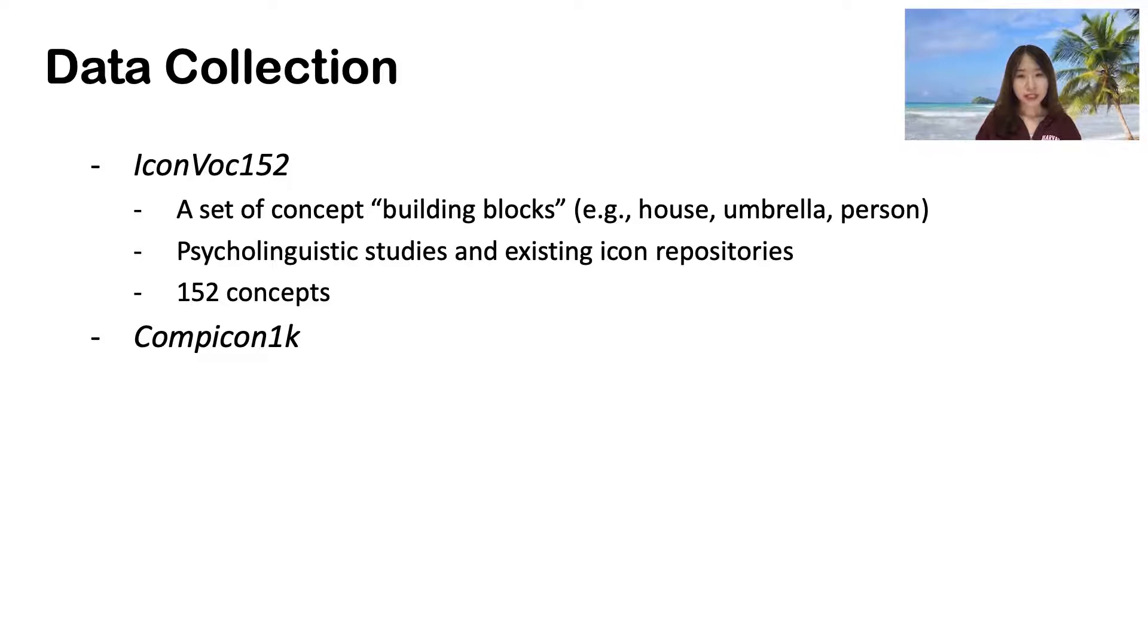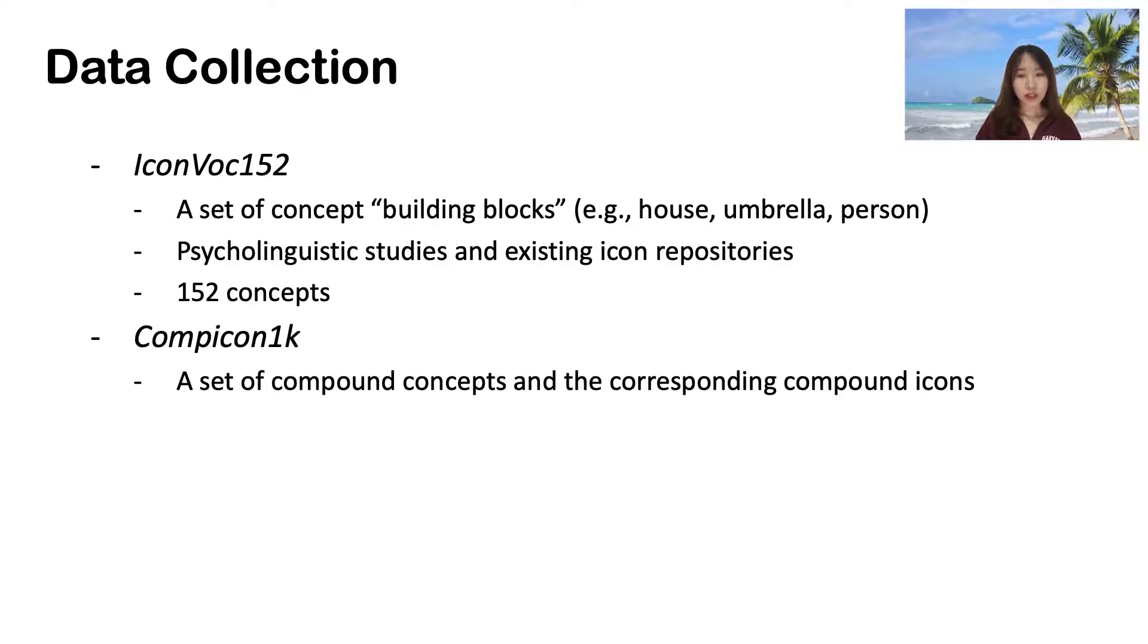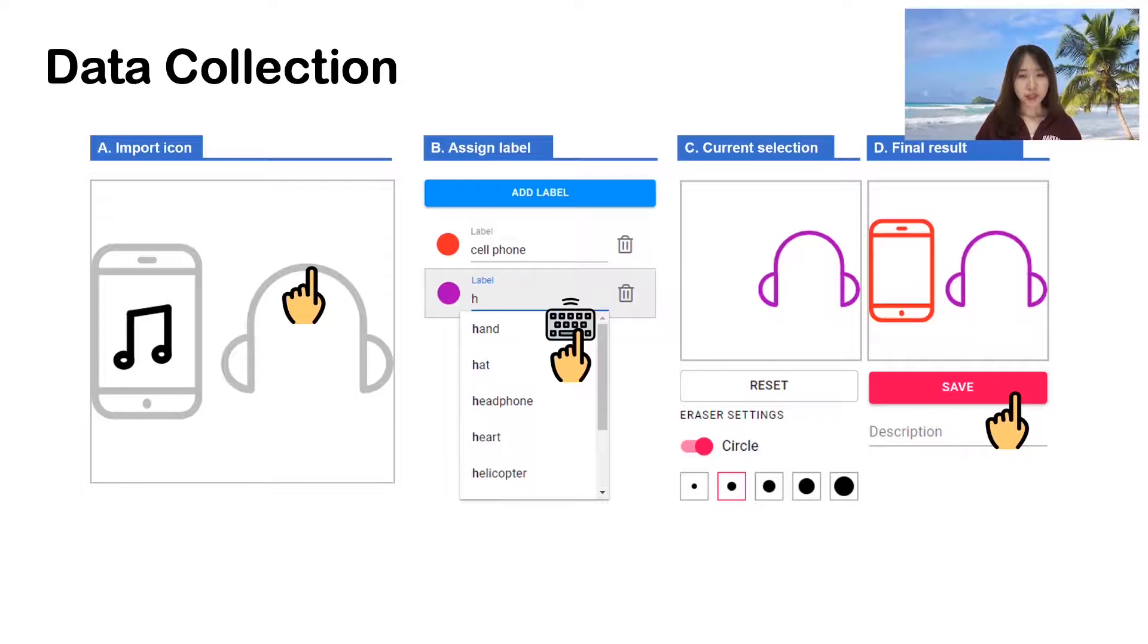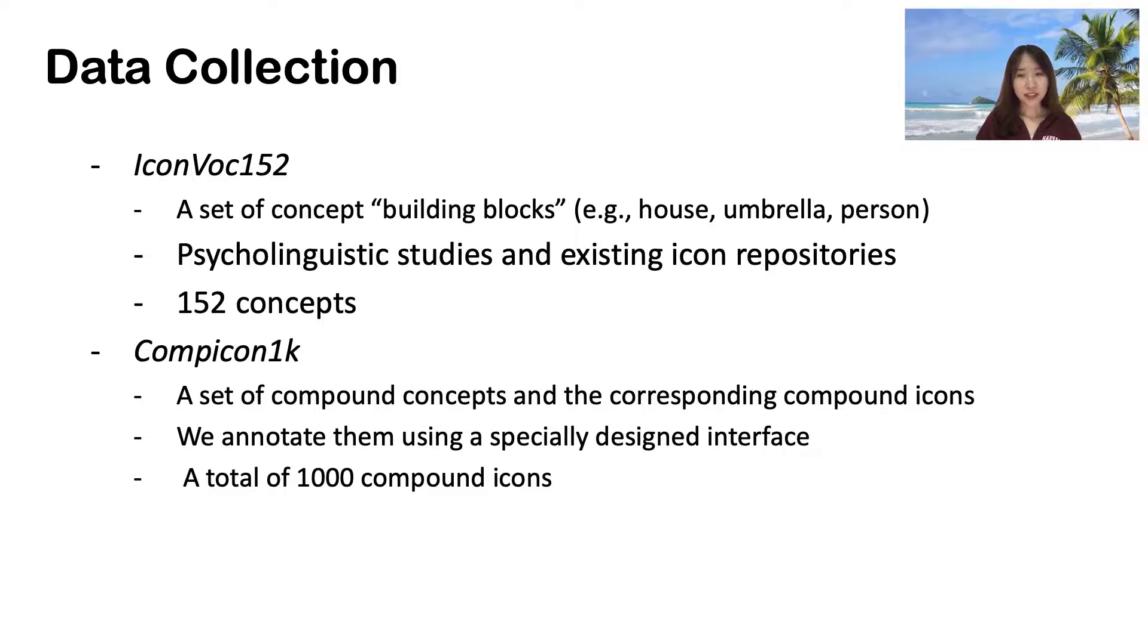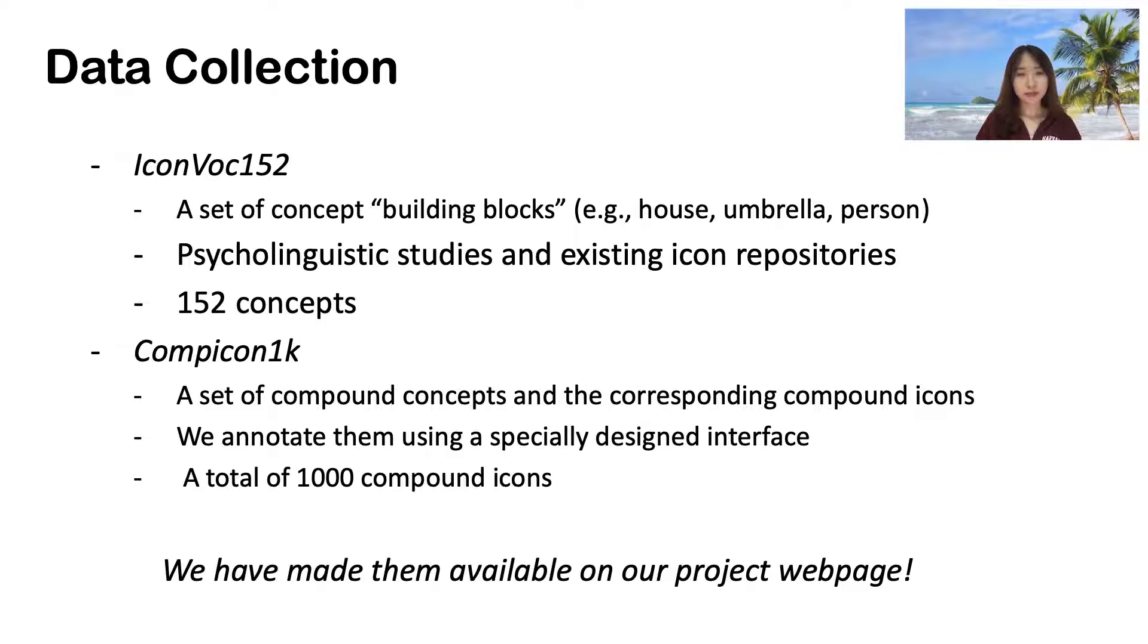To enable the pipeline to assemble constituent icons together, we use design knowledge of existing icons. Towards this purpose, we manually curated a set of compound concepts and collected the corresponding compound icons. We then annotated these icons using an interface developed specially for this purpose. We finally got a total of 1,000 compound icons and have made both datasets available on our project webpage.